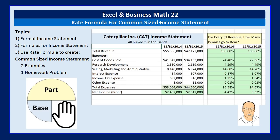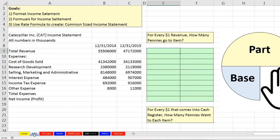Welcome to Excel and Business Math video number 22. In this video, we're going to see how to use the rate formula to create a common-sized income statement. We'll remind ourselves how to format an income statement, how to create some formulas for an income statement, and then use the rate formula — part divided by base — to create a common-sized income statement. We'll start on the sheet Cat, where I found Caterpillar's income statement online. We'll do Cat on this sheet, and then Amazon's income statement on the next sheet.